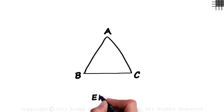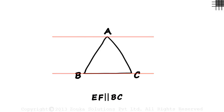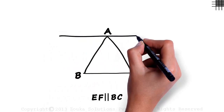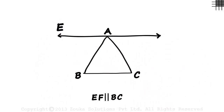We draw a line EF passing through point A and parallel to BC. It will look like this — it passes through point A and is parallel to BC.